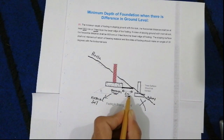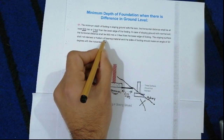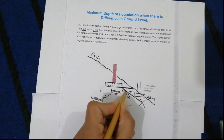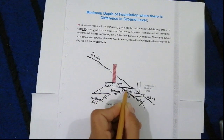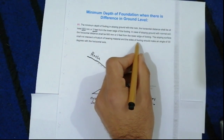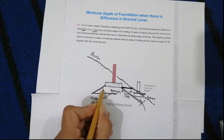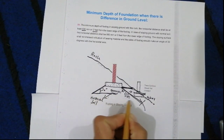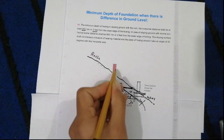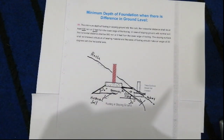The sloping surface shall not intersect the zone of bearing materials — it should not intersect, as you can see in the picture. Also, the side of the footing should make an angle of 30 degrees — not more than 30 and not less than 30. The column should be in a straight line; otherwise it will slip.